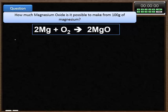Here's a second question for you to have a go at now. How much magnesium oxide is produced from 100 grams of magnesium in the reaction below? Pause the video, give it a go.